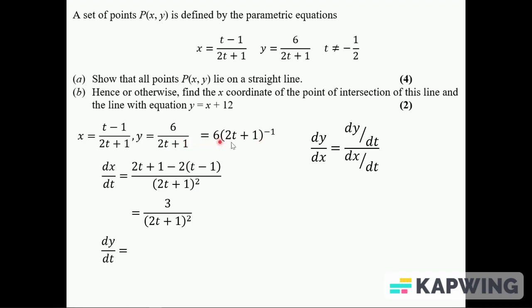To get dy by dt, I'm going to write it in this form and then use the chain rule. Then stick the minus 1 in front, so it's minus 6, then I'll have 2t plus 1 to the power minus 2 multiplied by 2, the bracket differentiated, giving me minus 12 over (2t plus 1) squared. And if I put that into here...